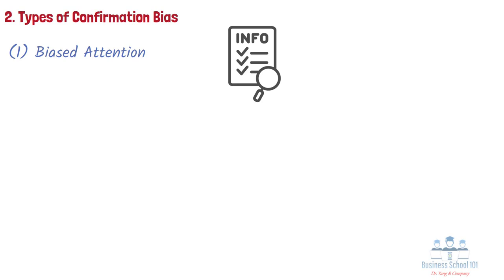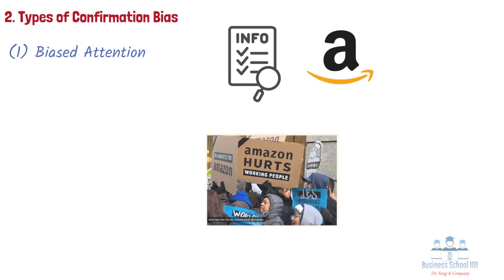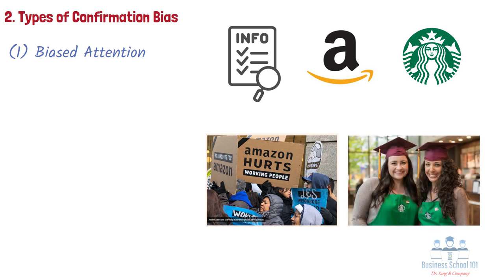For example, if a consumer is a huge fan of Amazon, they might ignore negative news about it, such as labor abuse. If consumers are loyal consumers of Starbucks, they will focus on positive information, such as Starbucks' corporate social responsibility effort, and how they impact society by supporting local communities, educating workers, reducing waste, etc.